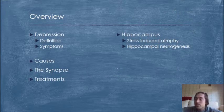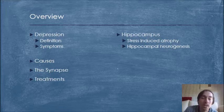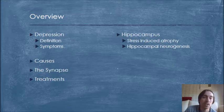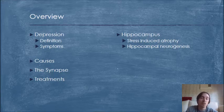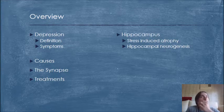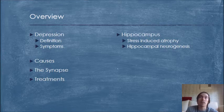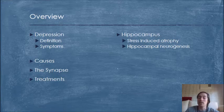So a quick overview of this lecture. I'm going to be talking first about the definition of depression as well as the symptoms as defined by the DSM-5 by the American Psychiatric Association. I'm also going to talk about the causes of depression, the synapse, the different treatments available, and lastly the role the hippocampus plays in depression, which I believe to be the new paradigm in neuroscience treatment of depression.